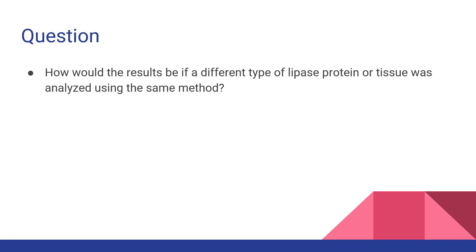From this experiment, a future question to consider is how would the results differ if a different type of lipid-based protein, or if a different type of tissue altogether were analyzed using the same method of immunoprecipitation and Western blotting together?